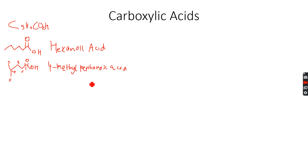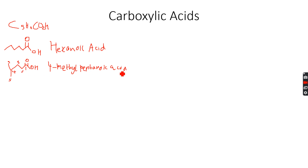Remember that the carboxylic acid group will always be on the first carbon atom. For 4-methylpentanoic acid: there are five carbon atoms in the main chain giving pentanoic acid, and there is a methyl group on the fourth carbon atom, giving us 4-methylpentanoic acid. Now let's make some more isomers.